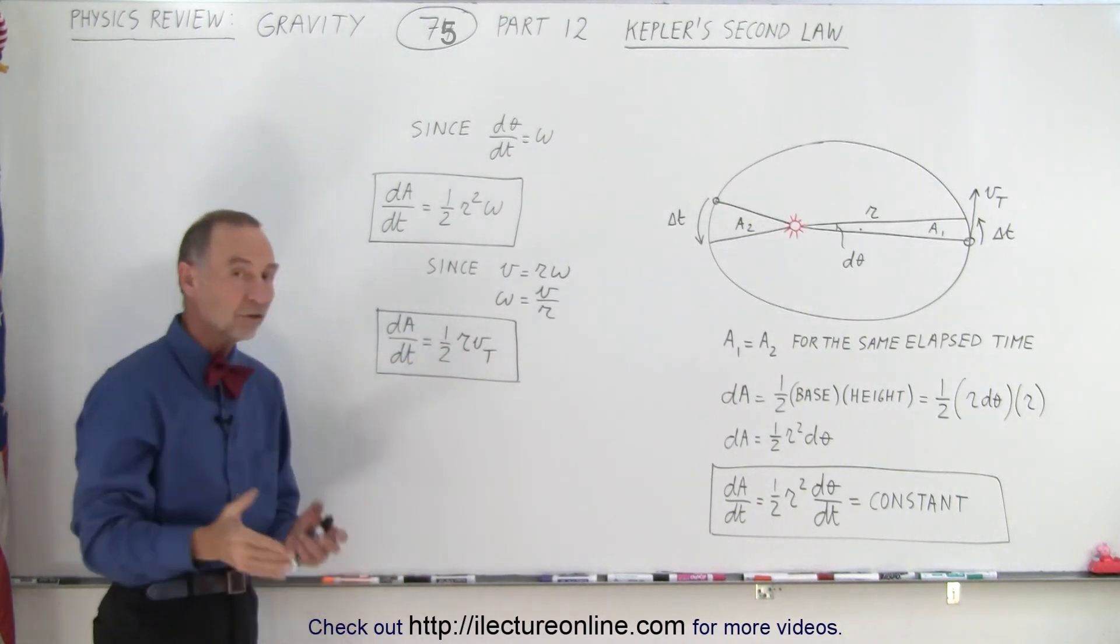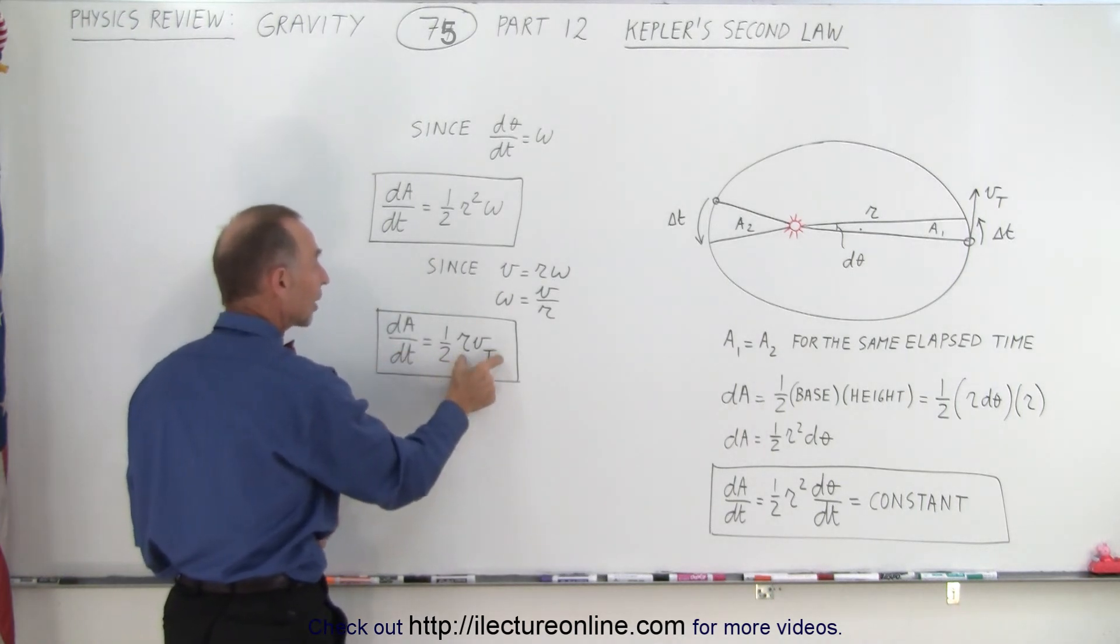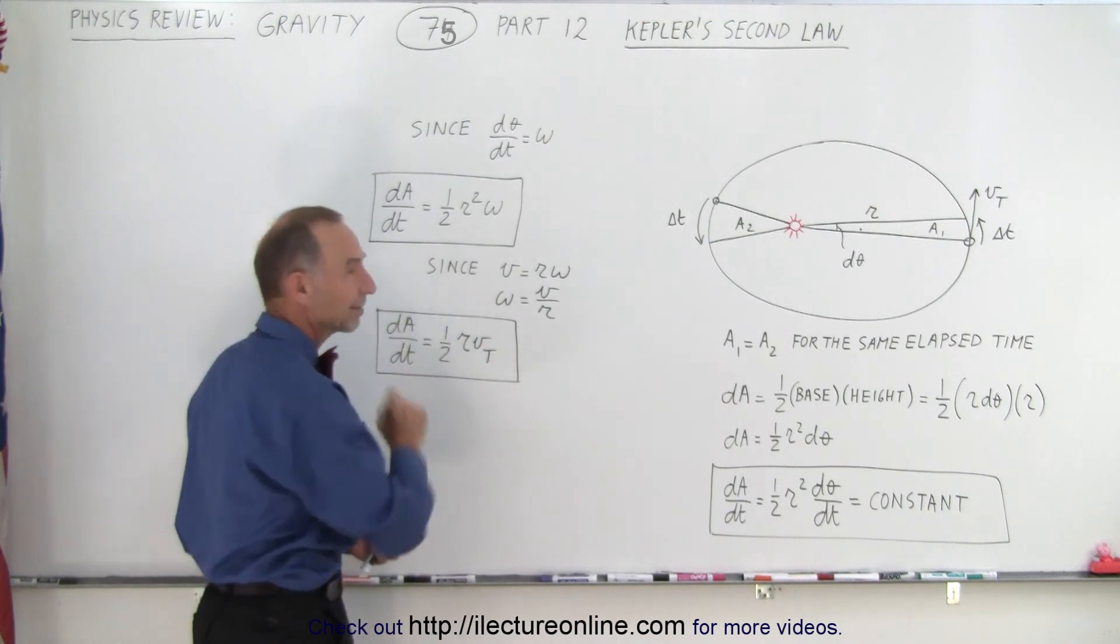Now this equation is the most useful, because you know that this is a constant, so the product of these two is a constant. So as r becomes bigger, v must become smaller, when r becomes smaller, v becomes bigger, so that the product is always the exact same amount.